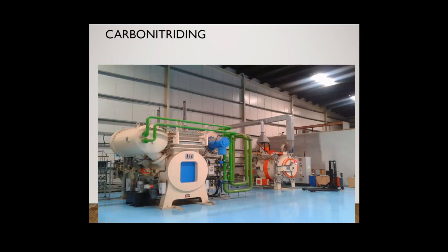The next process is carbonitriding. As the name implies, both carbon monoxide and ammonia gas flow through the furnace simultaneously. The component is placed inside the furnace, and the two gases - carbon monoxide and ammonia - are allowed to flow through the pipeline and enter the furnace. At the same time heating is applied by electrical heaters. Carbon and nitrogen are formed because of the reactions, and both are deposited around the surface of the material, so case hardening is achieved.